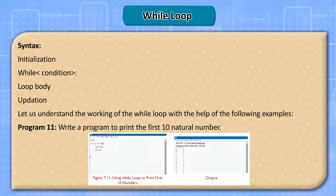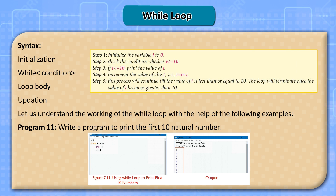Syntax: initialization, while condition, loop body, updation. Program 11: write a program to print the first 10 natural numbers. Step 1: initialize variable i to 0. Step 2: check the condition whether i is less than or equal to 10. Step 3: if i is less than or equal to 10, print the value of i. Step 4: increment the value of i by 1 — i equals i plus 1.